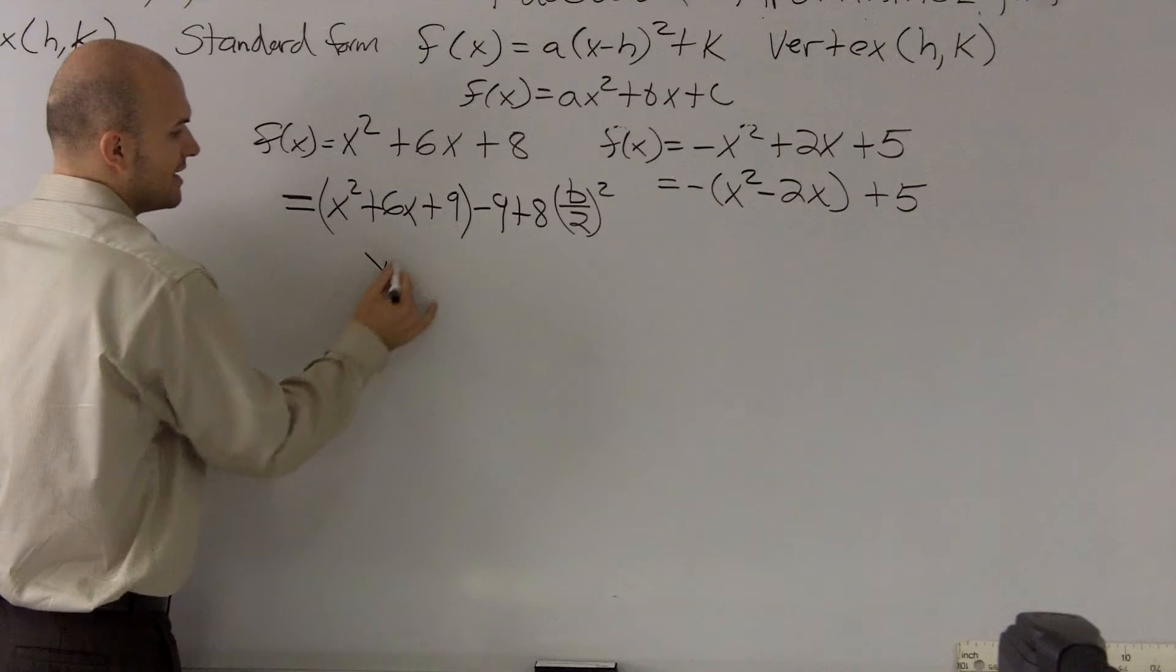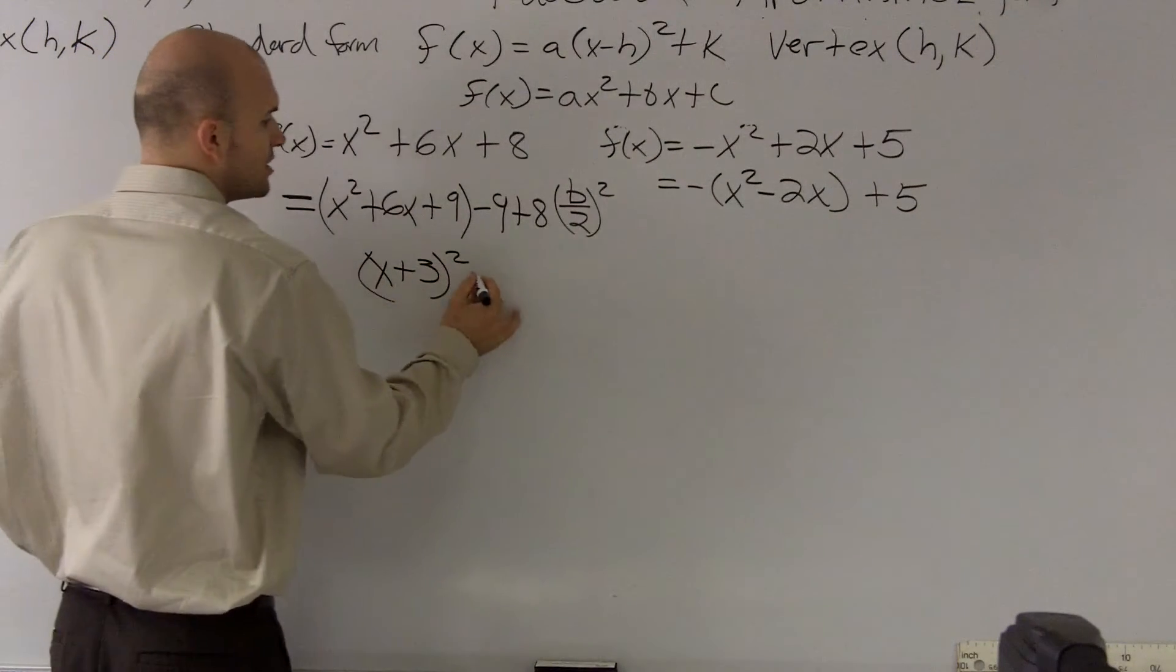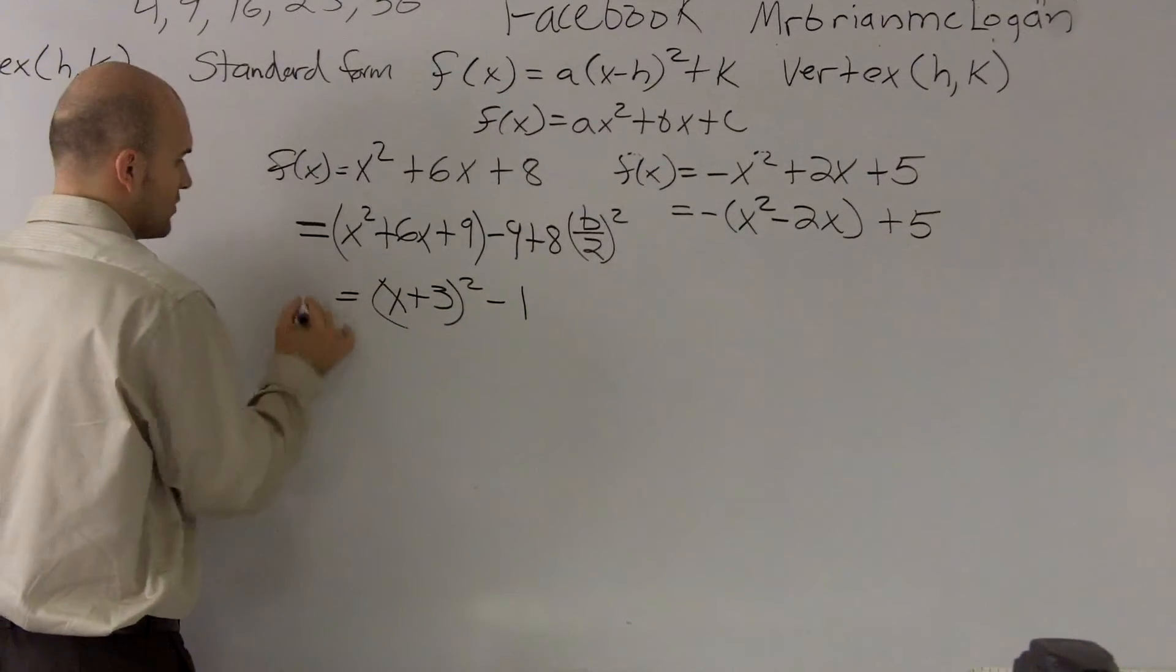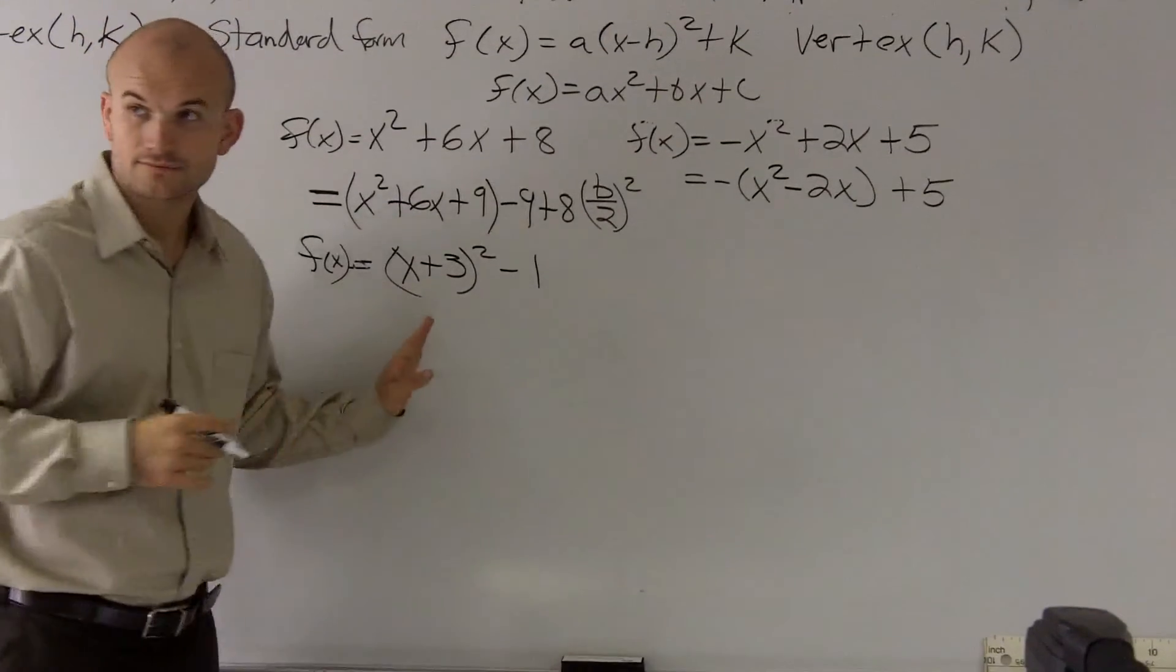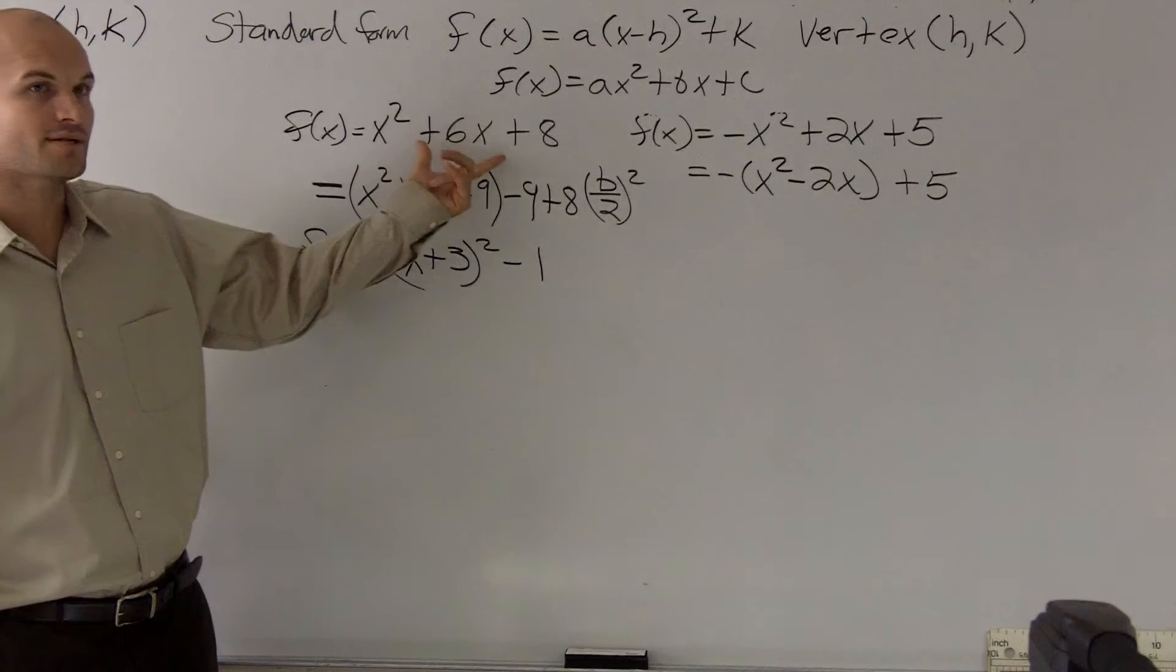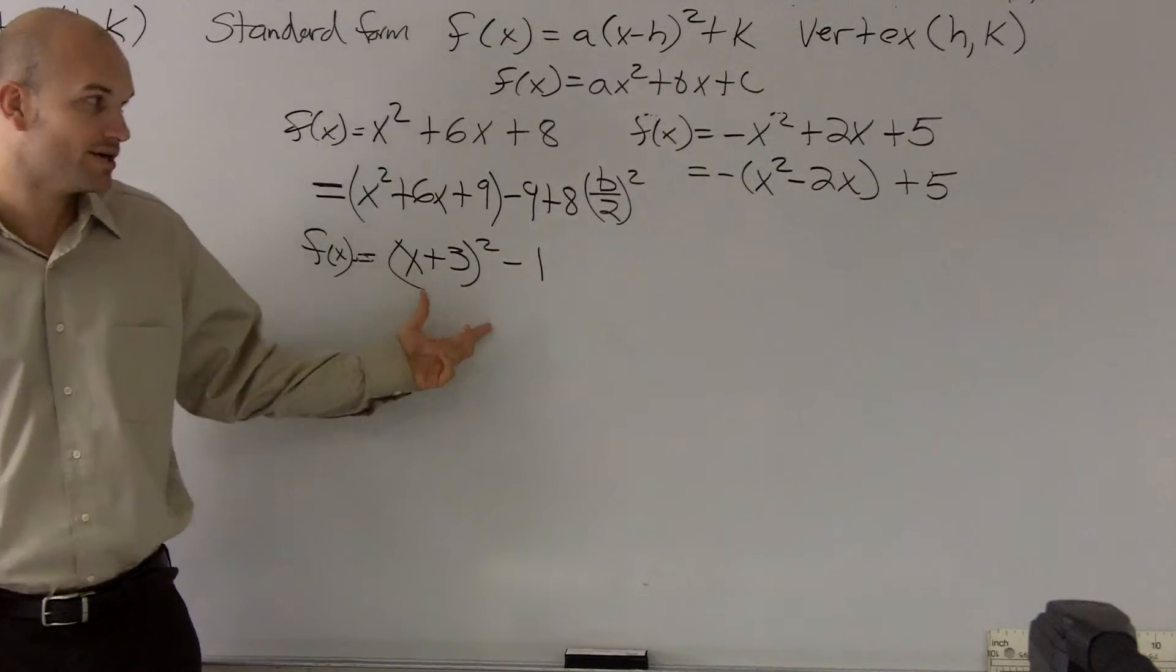Well, this we can rewrite as x plus 3, which is the whole reason why I want to complete the square when finding it in the vertex form. So you have f of x equals x plus 3 squared minus 1. Now I've transformed from a quadratic equation into our standard form of our equation.